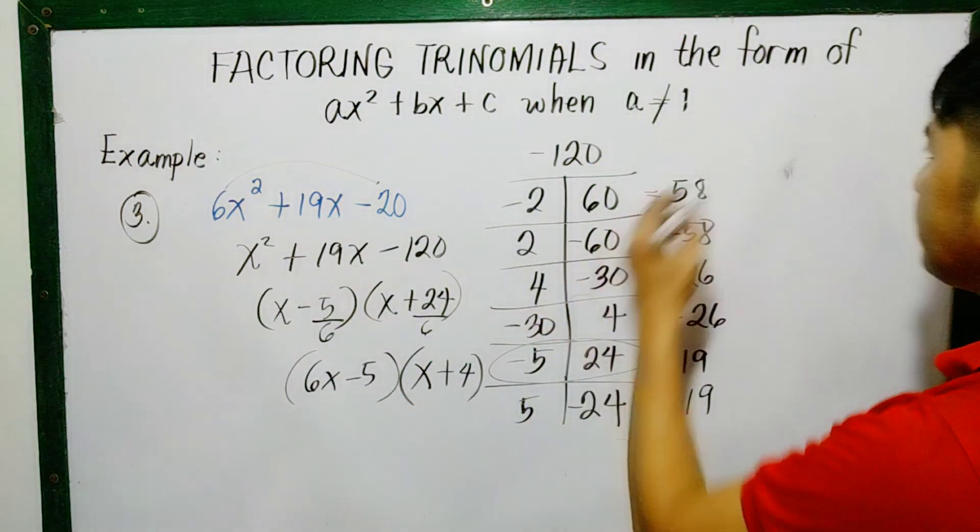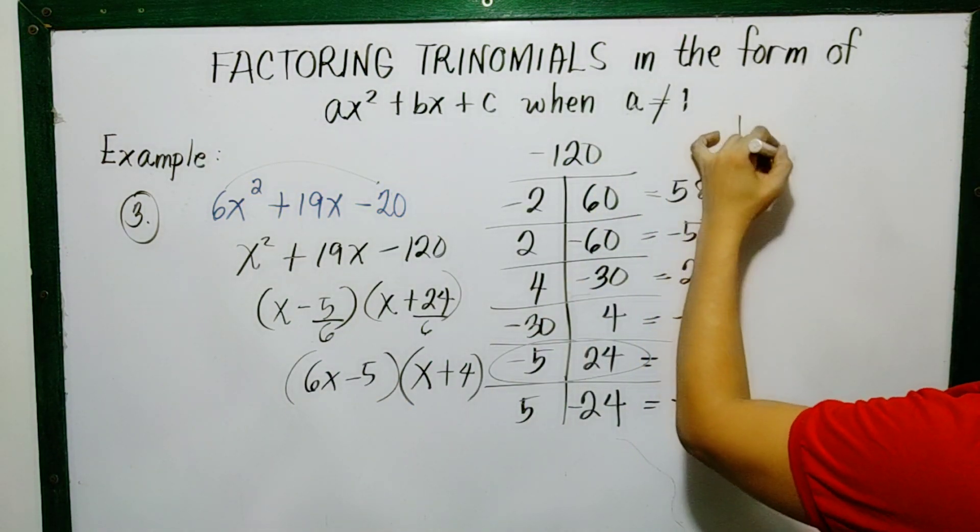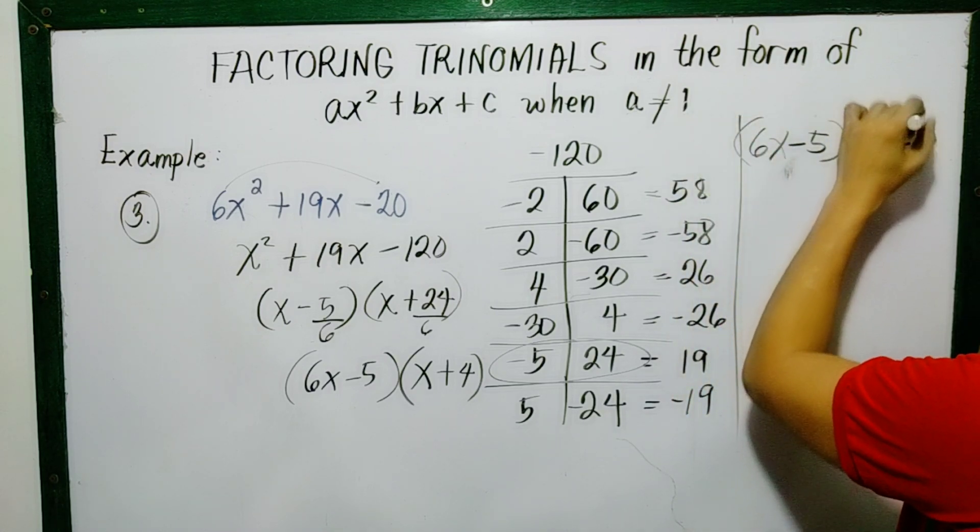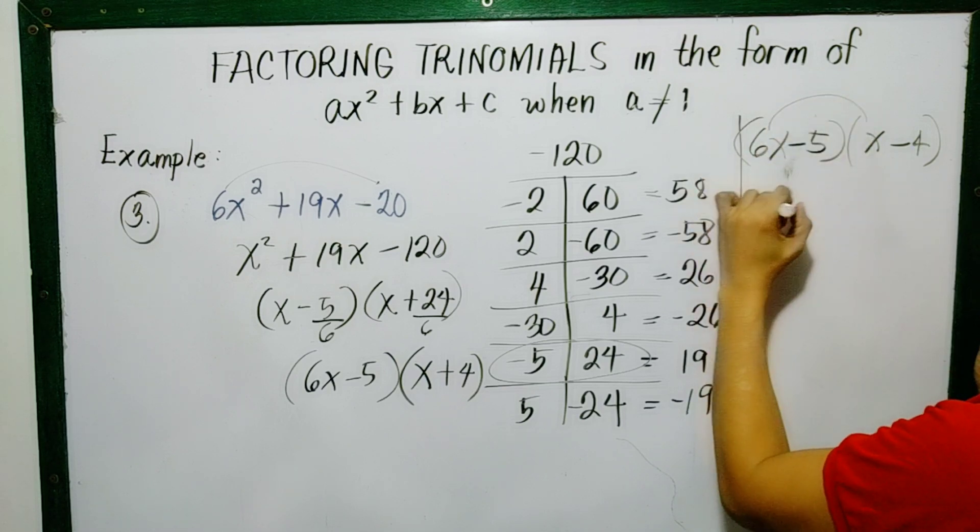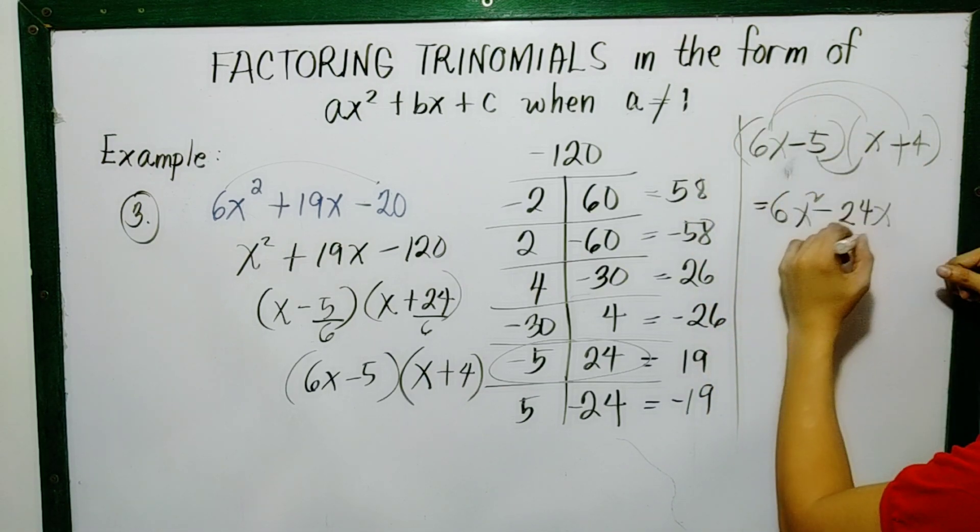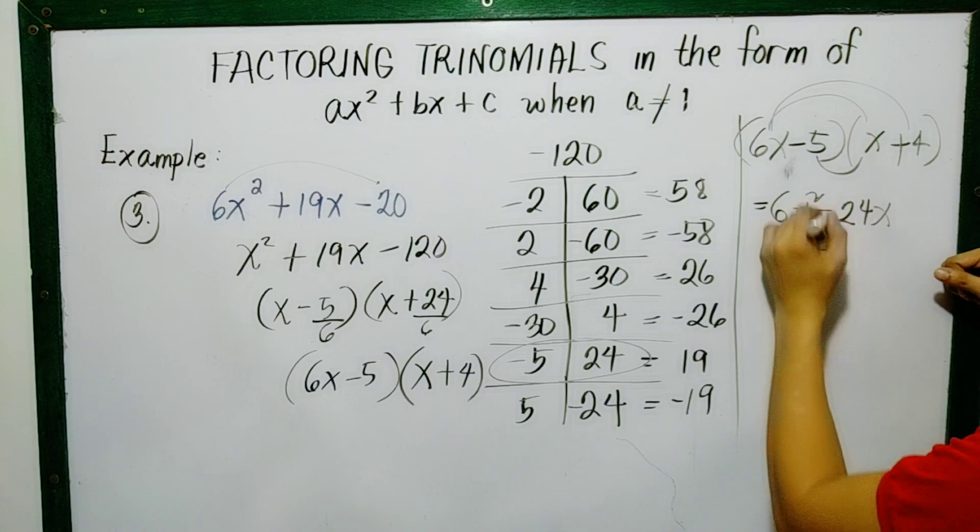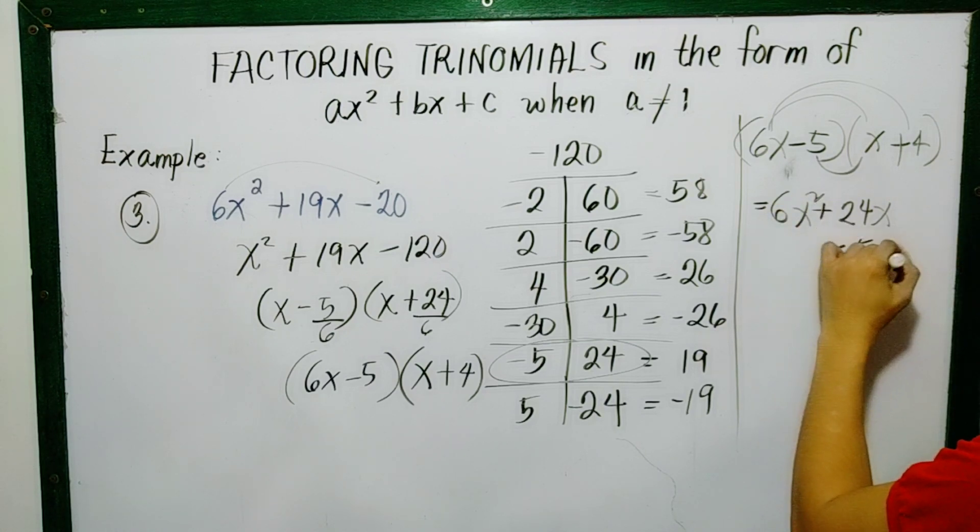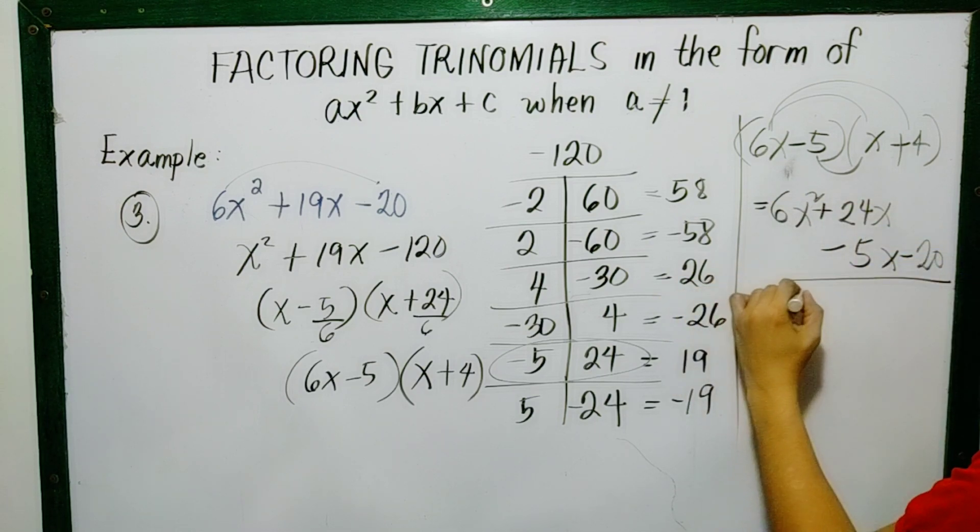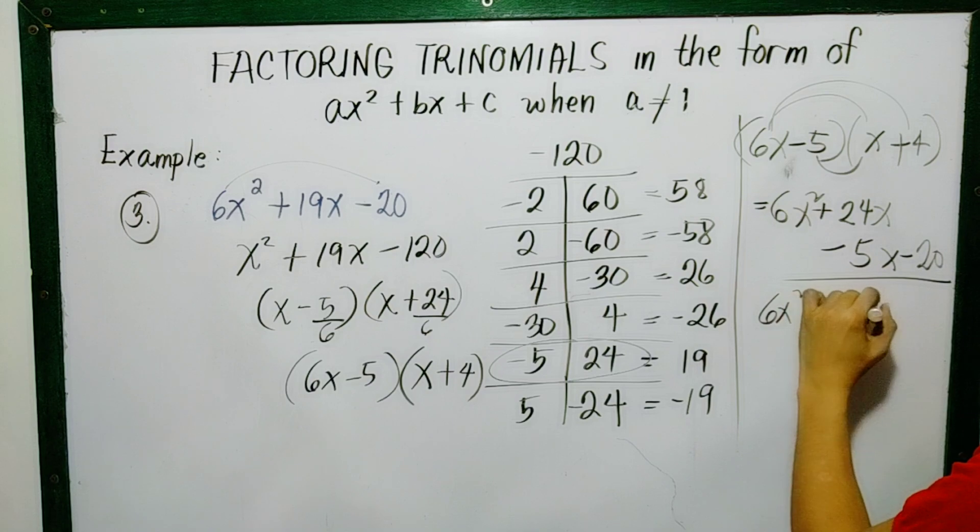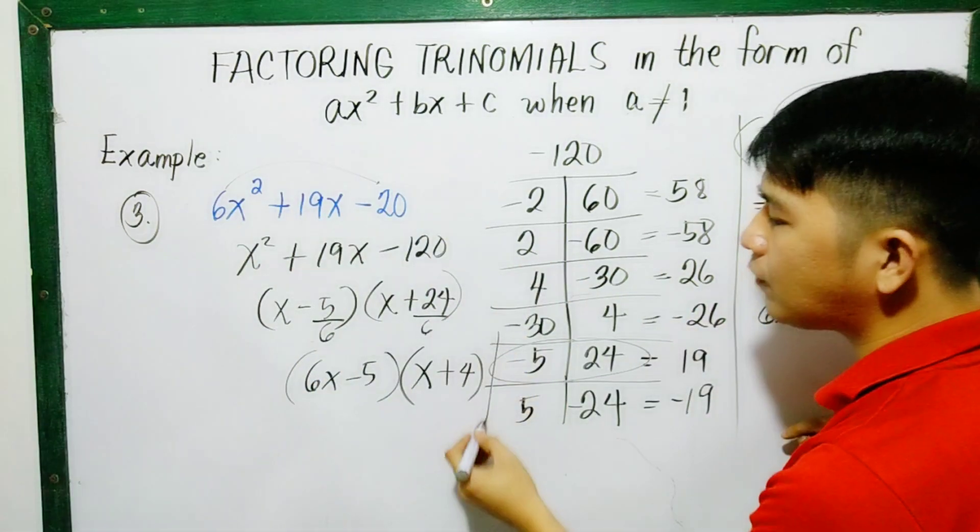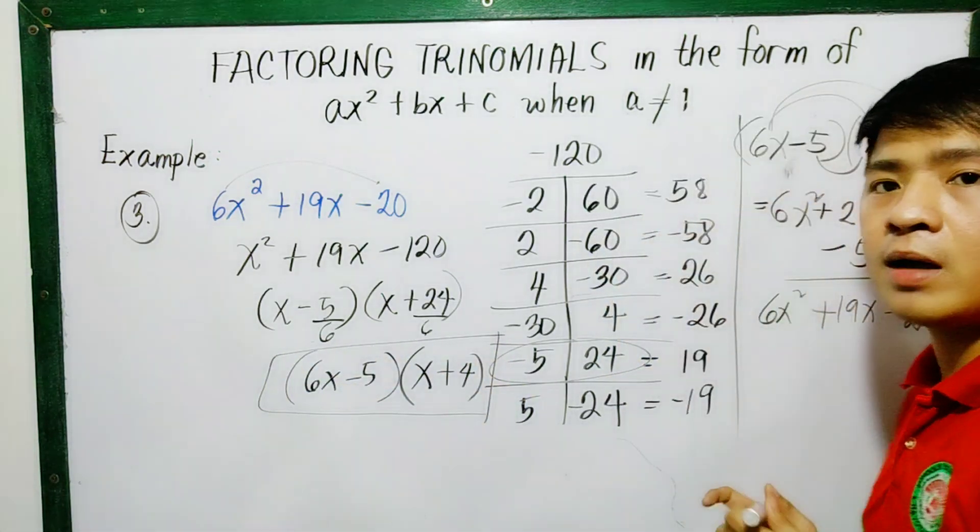Let's check if it's correct. So we have 6x minus 5 and x plus 4. So we will have 6x squared plus 24x minus 5x minus 20. So that is 6x squared plus 19x minus 20. So are they the same? Yes. So therefore, these are the factors.